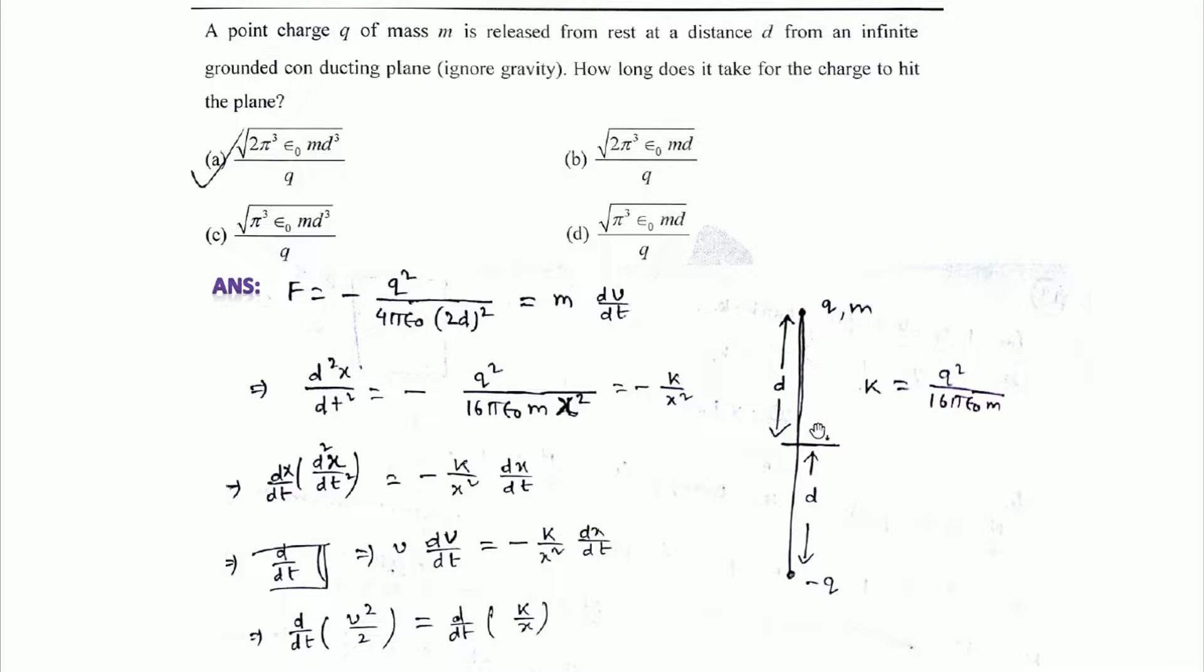Now we have two charges of opposite nature but of same magnitude. Therefore, the force from Coulomb's law we can write as q₁q₂ / (4πε₀r²). The distance between the two charges is 2d, so r is replaced by 2d.